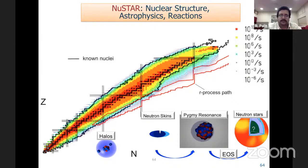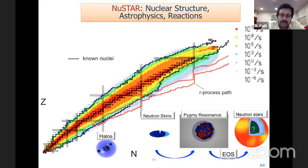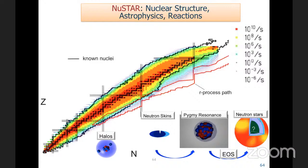Question: What is the total photopeak efficiency of INGA? With 24 clovers, the actual photopeak efficiency is about 4.8% at 1 MeV.